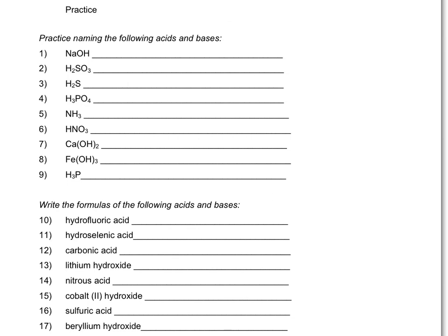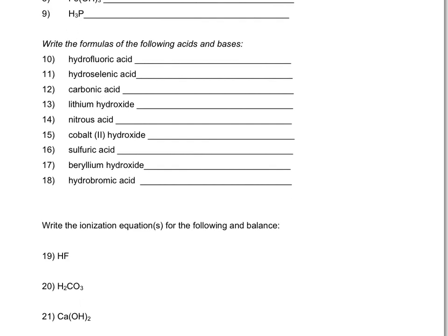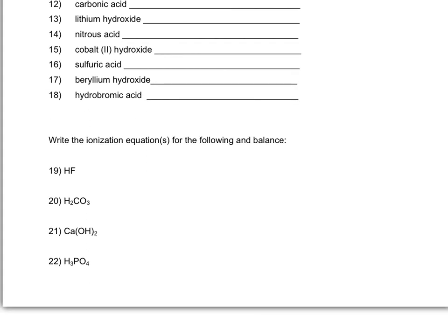Try out the practice worksheet. For the first set of questions, use the formulas of the acids and bases to develop a name using the rules discussed in the note. The second set is the opposite. Using the name, reverse the process and come up with the formula of the acid or the base. Questions 19-22 is writing ionization equations for the acids and the bases listed. Thank you.